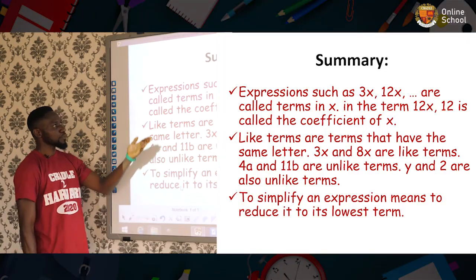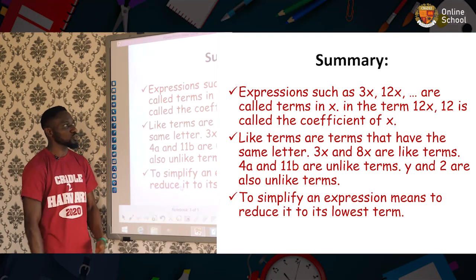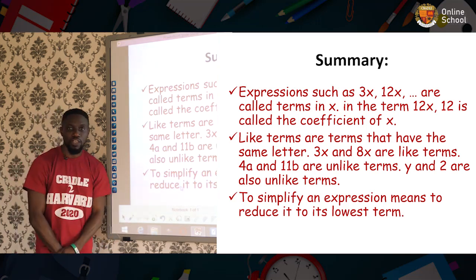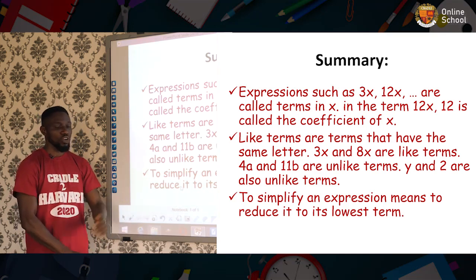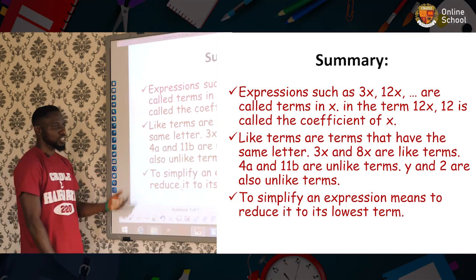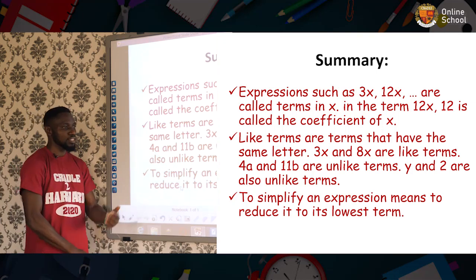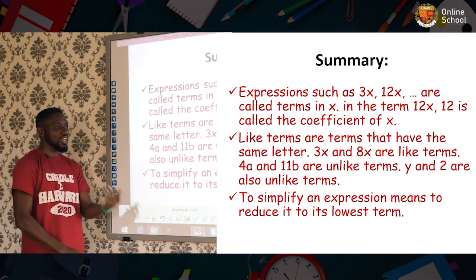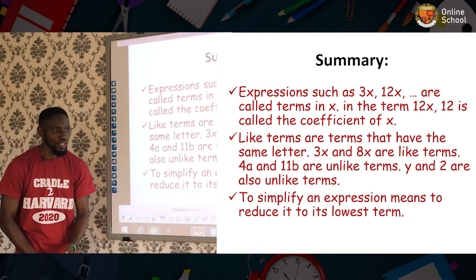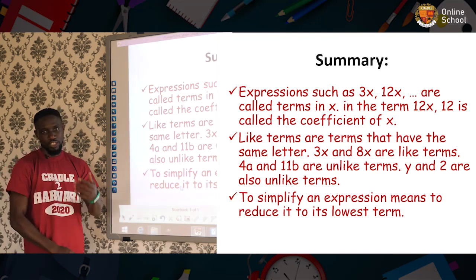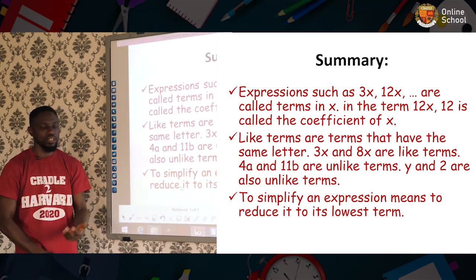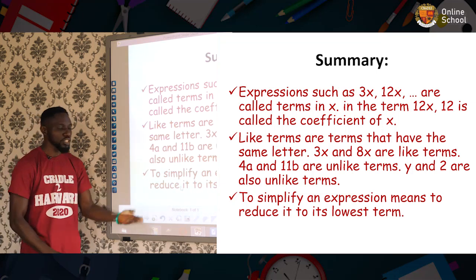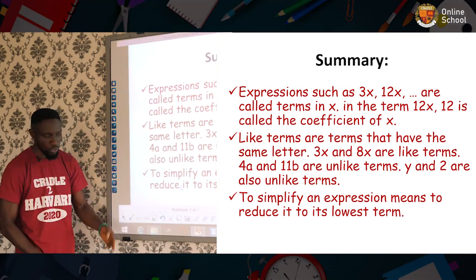We'll go to the next one. Now, in summary, expressions such as 3x, 12x and so on are called terms in x. The term 12x, 12 is the coefficient of x. Also, the second one we learned is that like terms are terms that have the same letter. 3x and 8x are like terms. 4a and 11b are unlike terms. The same thing, y and 2 also are unlike terms. Thirdly, we said to simplify an expression means to reduce it to its lowest term.